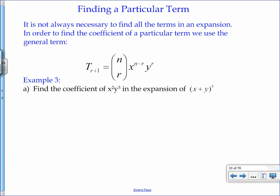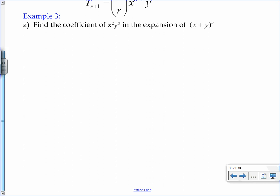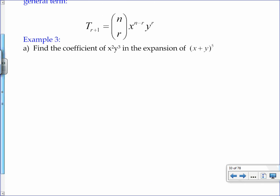Example 3 here says find the coefficient of x squared y cubed in the expansion of x plus y to the power 5. So the first thing we can do is just use the shape of what's written above, and we can say that T_{r+1}. We don't know what r is yet. That's what we're going to have to try and think. So we can rewrite it. We know that n is 5, so we can write 5 choose r.